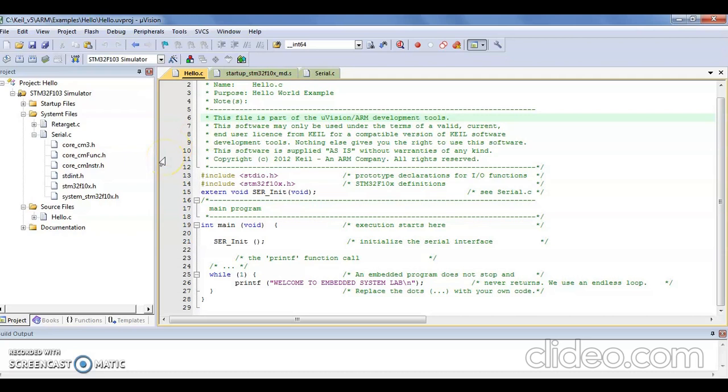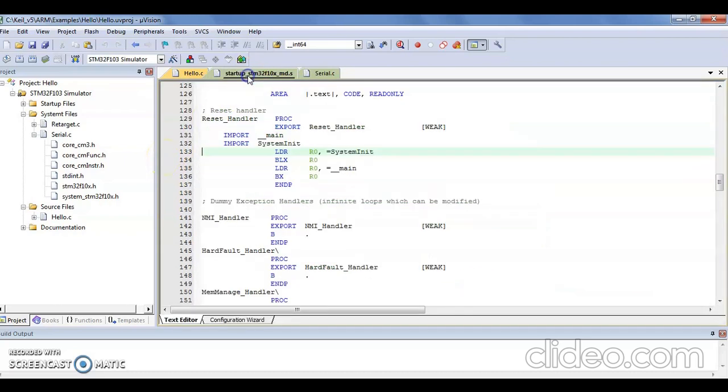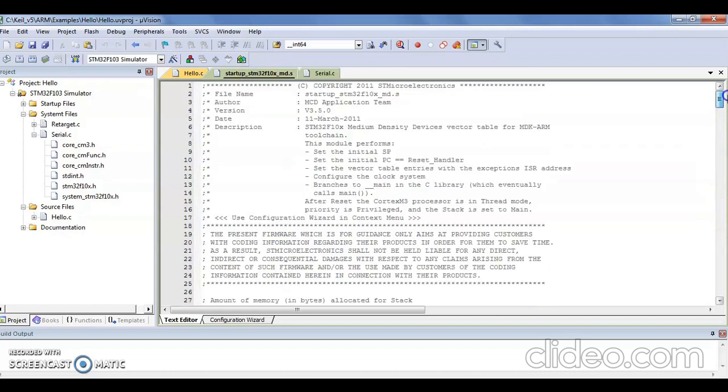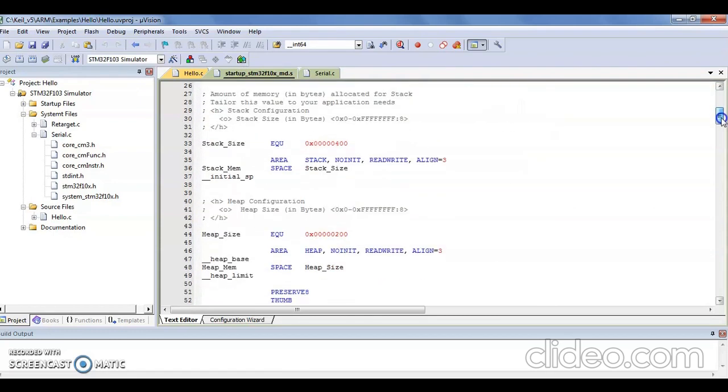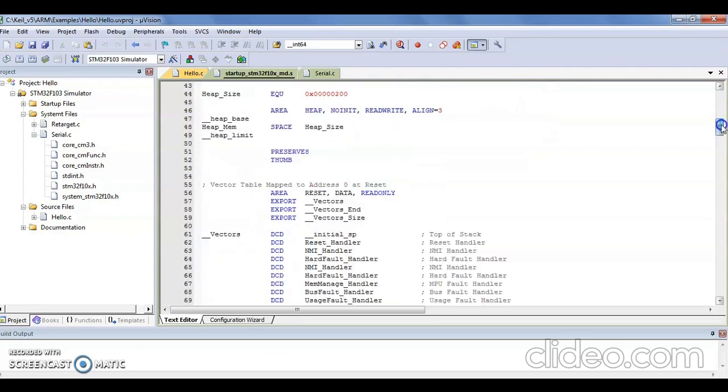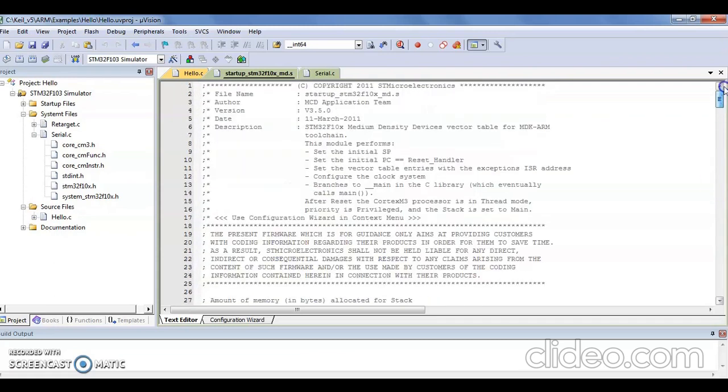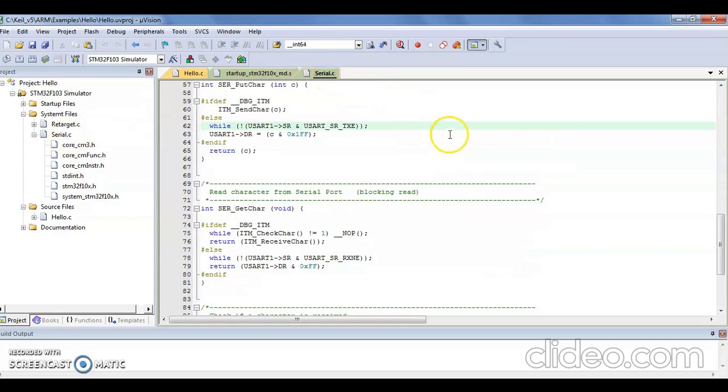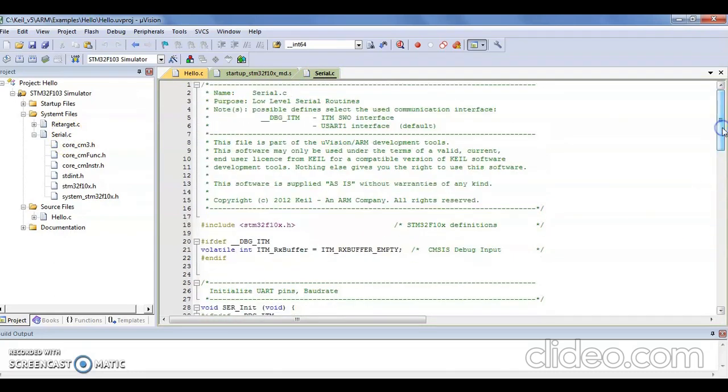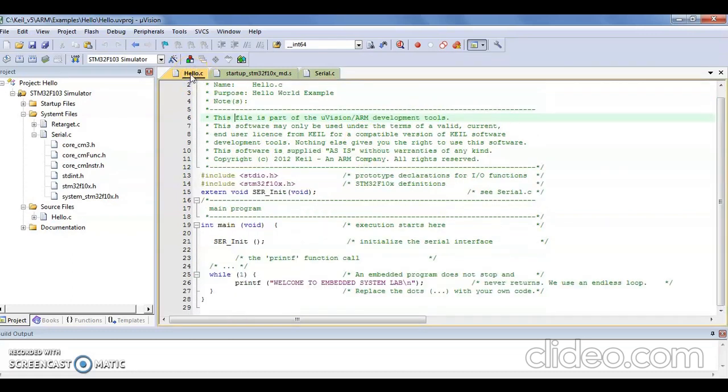We also have a startup file STM32FX which contains all the information about peripherals, memory mapping, interrupt vector tables. We also have different addresses of stack, heap, and all the other initializations necessary for different registers. We also have a file called serial.c which performs initialization of the serial interface before beginning serial communication.